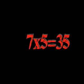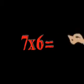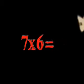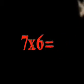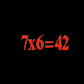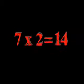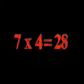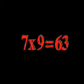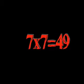7x5 is 35. Seven times six is forty-two. Seven times seven is forty-nine.